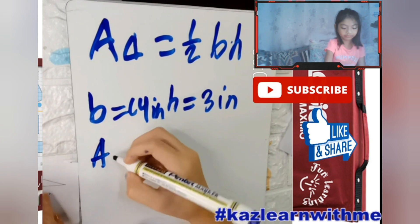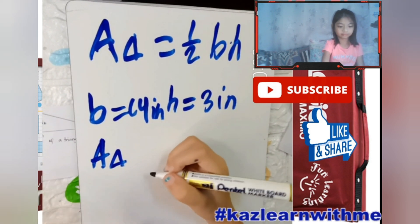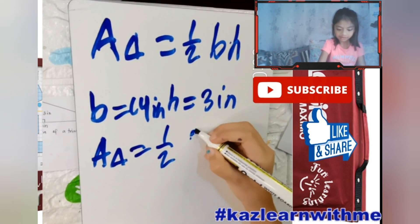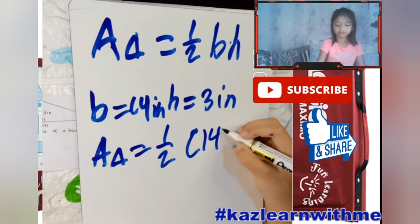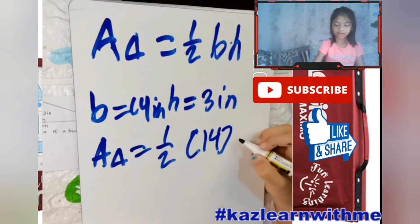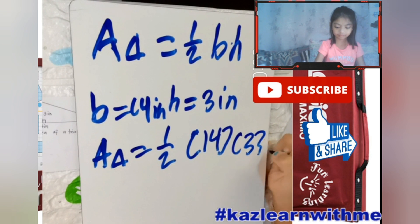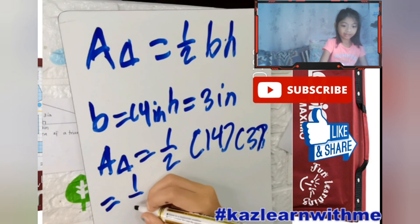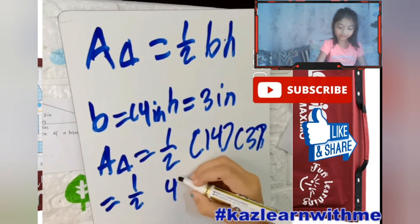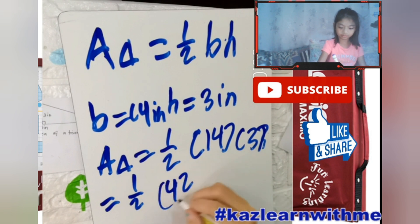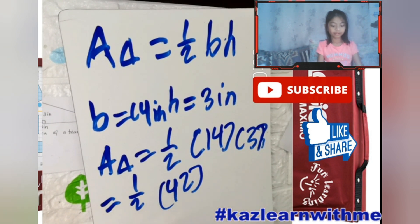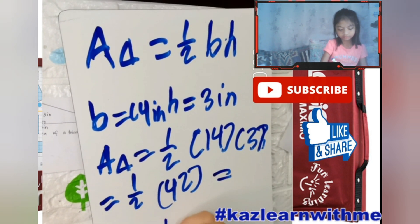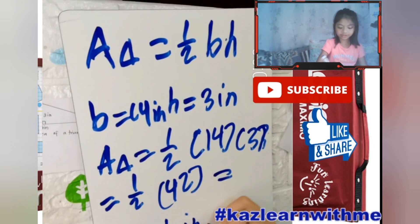Area of a triangle equals one-half, and then fourteen times three equals one-half times forty-two equals twenty-one inches squared.